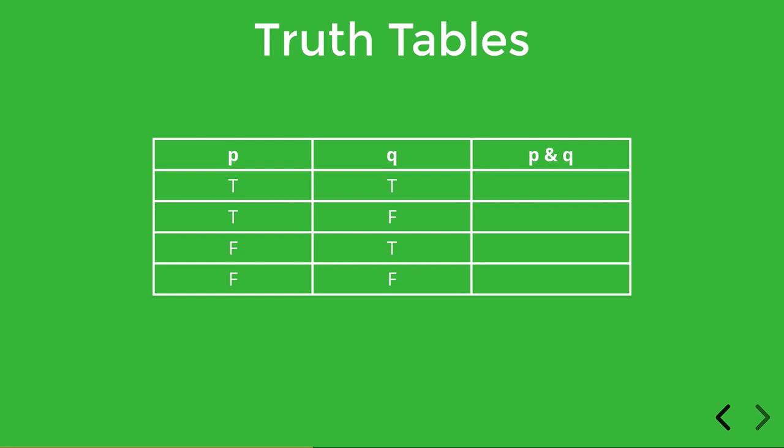So we begin by initializing the columns with atomic variables with their corresponding truth values. Then when we're deciding P and Q, we compute the value for P and Q at each row based on the value of P at that row and the value of Q at that row. So for row one, both P and Q are true, and as we've already observed, that means the conjunction is going to be true if both conjuncts are true as well, so therefore P and Q is true.